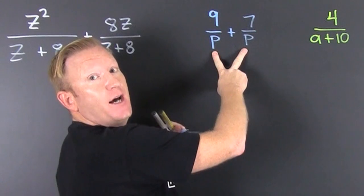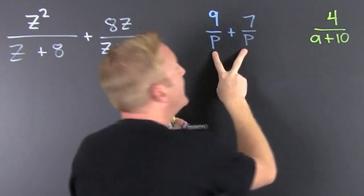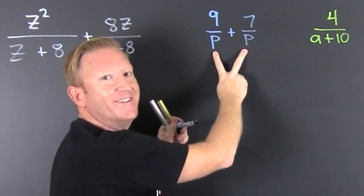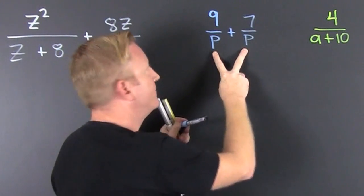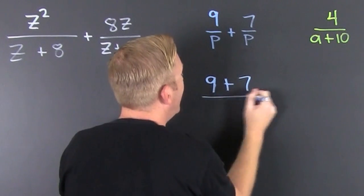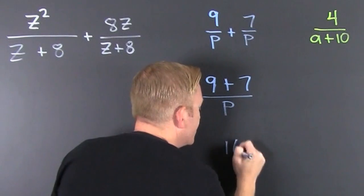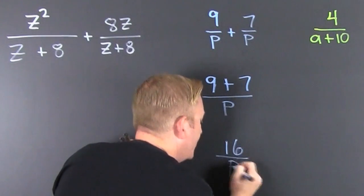We see that the denominators are the same. Once we have a common denominator, what can we do to their numerators? So we add them. That's 9 plus 7 divided by P, that common denominator. 9 and 7 turn out to be 16 over P.